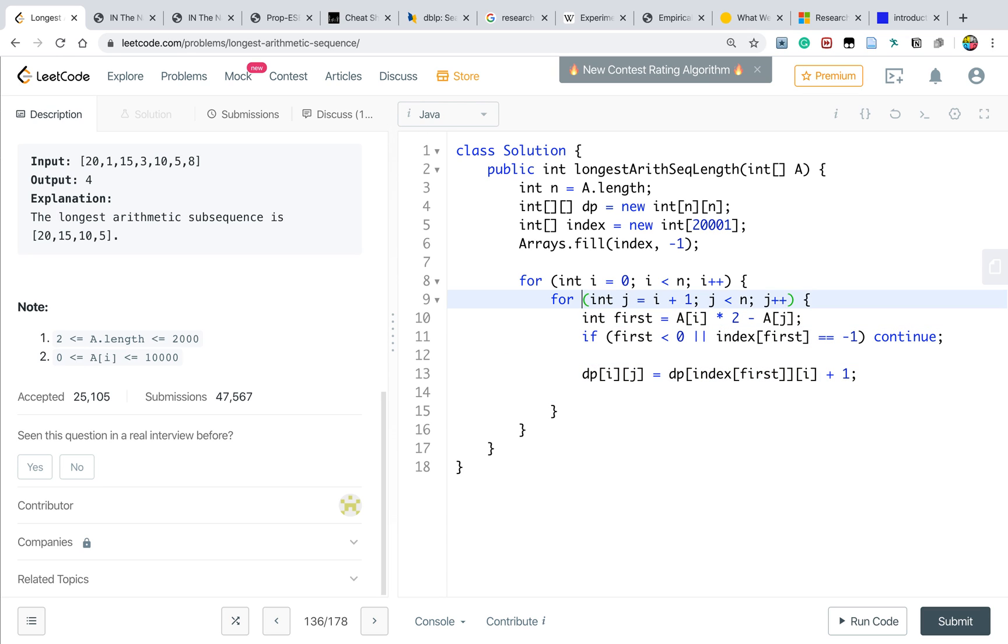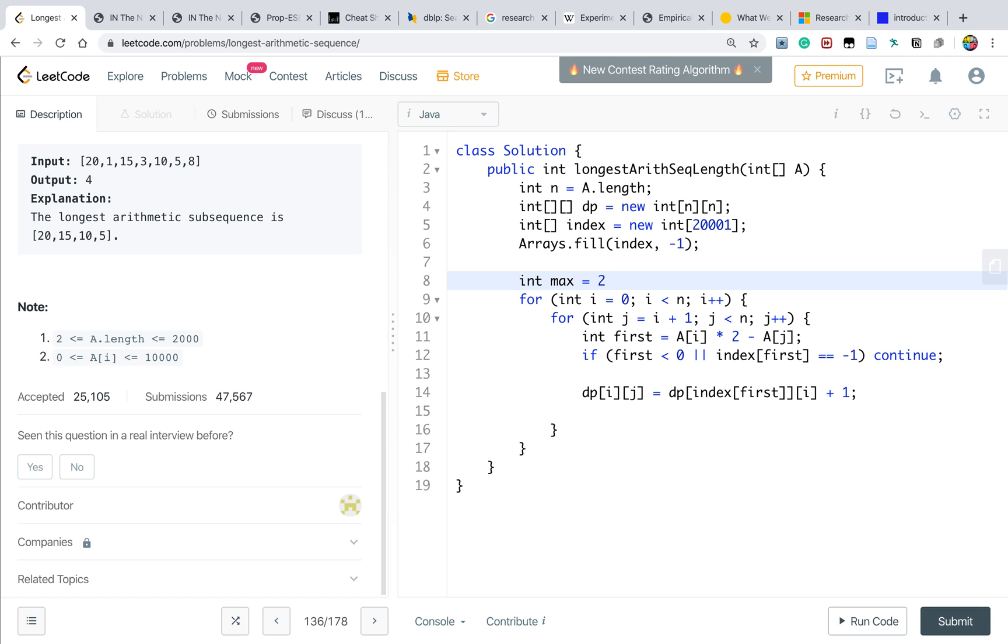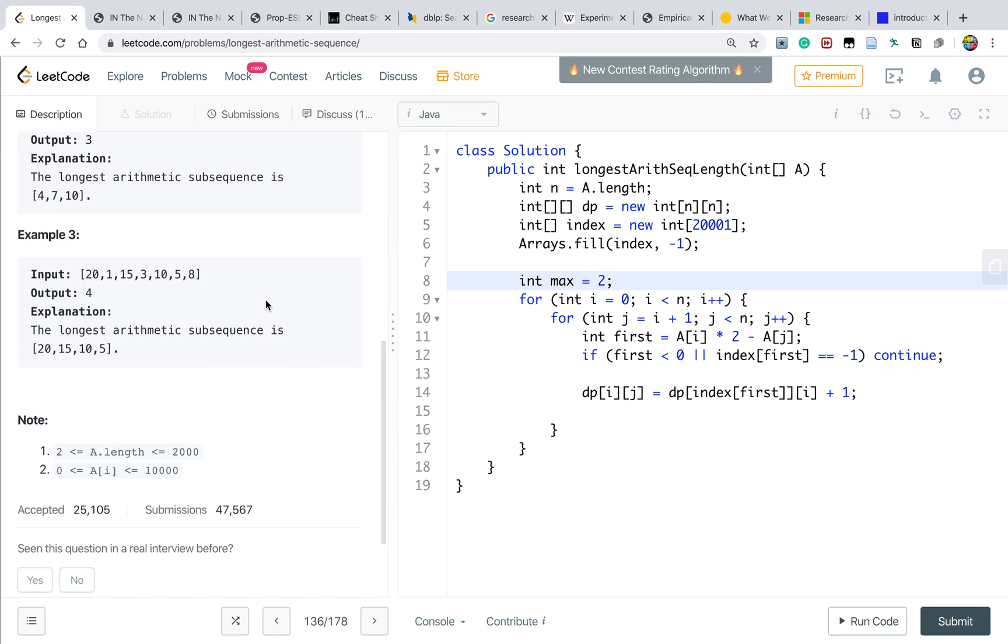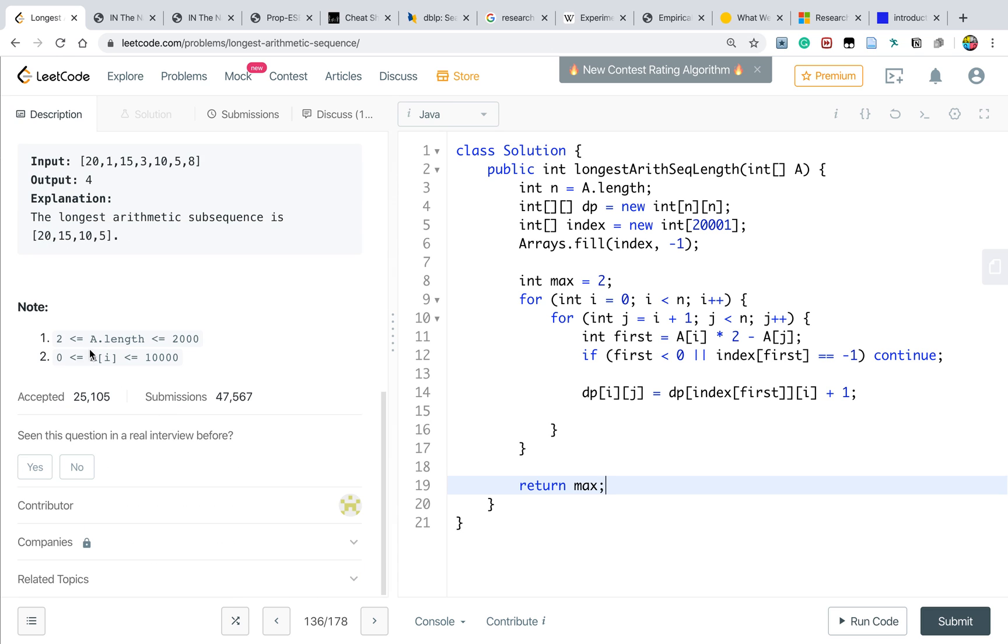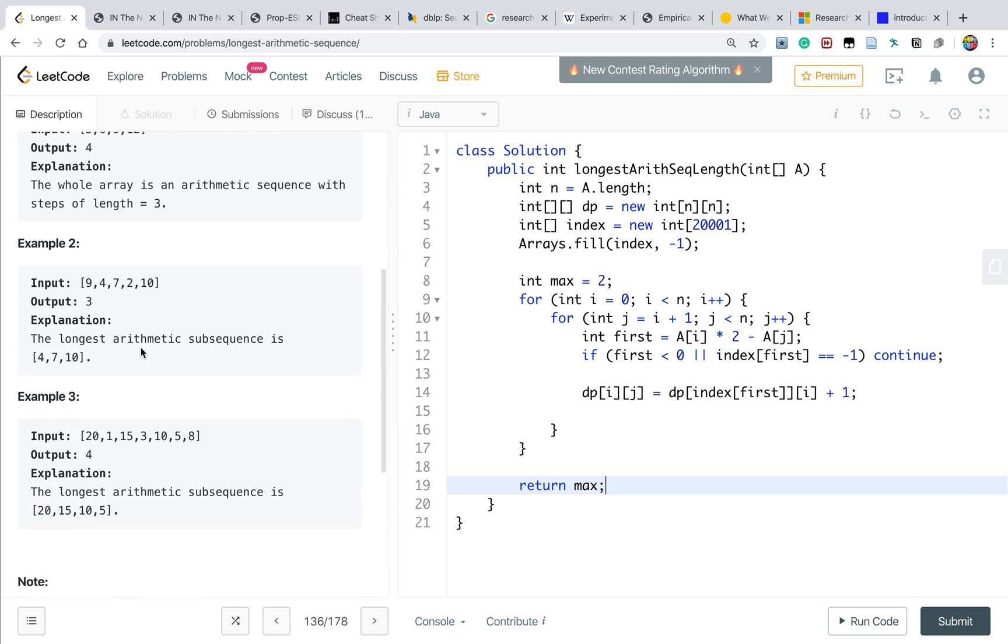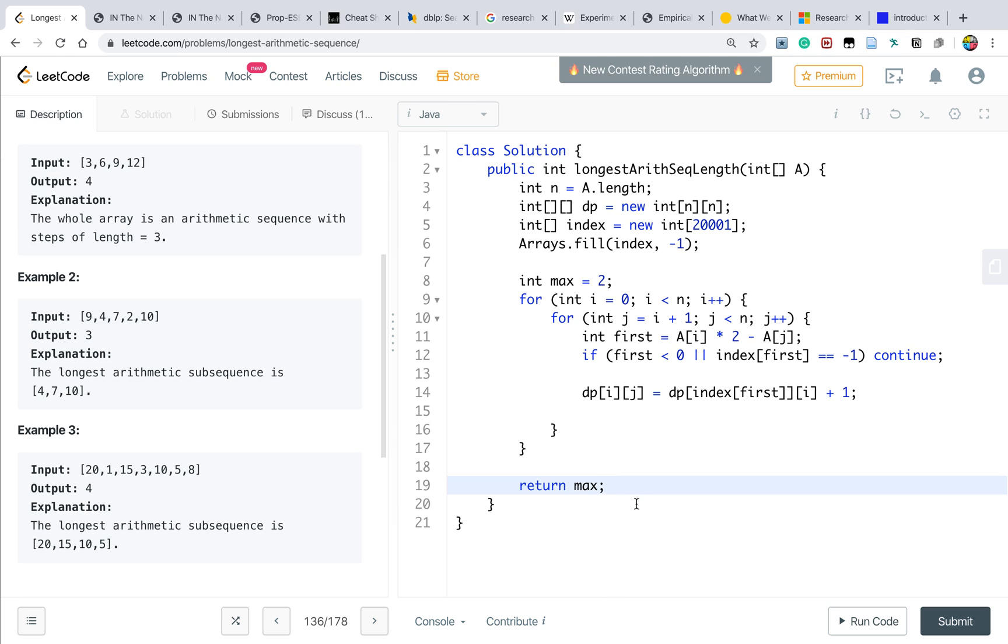We also need a global max, which is max equal to 2. Why is it 2? Because as we can imagine, if we can never find a length of 3 arithmetic sequence, we just return this max, right? As the length is greater or equal to 2, so the minimum should just be 2 rather than 0. Okay. So we update the max with dp[i,j].